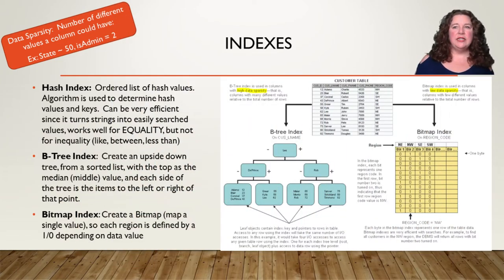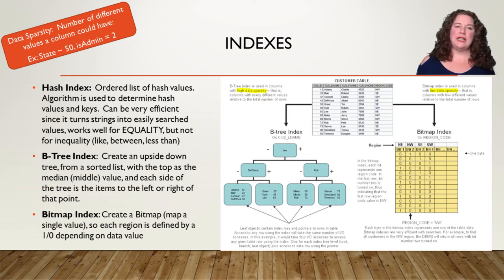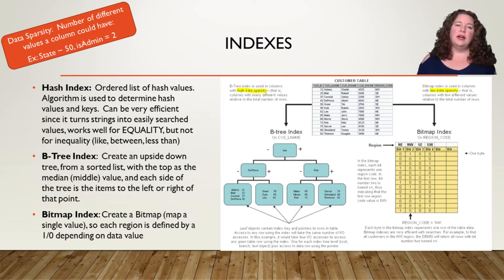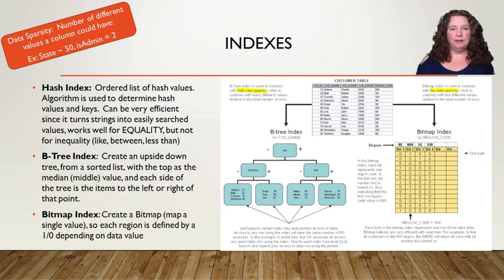Indexes are great because they help our database know what we want to look for before we've actually looked for it. The important concept when working with indexes is data sparsity — how many different values a column is allowed to have. A state field has about 50 possible values; a Boolean is_admin field has only two. You can change your index type based on the sparsity.